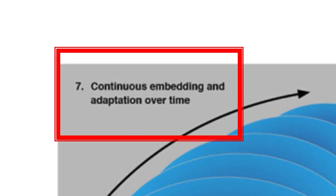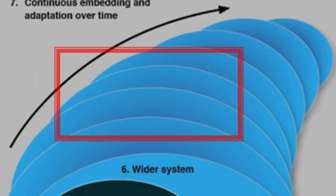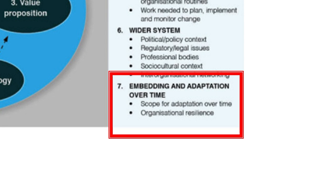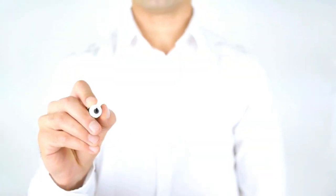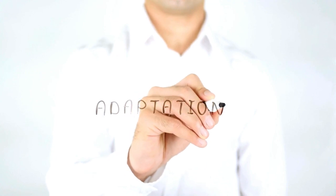The final domain of the NAS is embedding and adapting over time — ensuring that promising technologies not only overcome initial barriers but continue to evolve and thrive within dynamic healthcare systems. This domain is really about long-term success: how much scope is there to adapt and co-evolve the technology and service over time? If the technology and the organisation are able to adapt over time, this will come up as simple or complicated. But if the technology is very brittle and hard to adapt, and so is the organisation, it's going to come up as more complex.